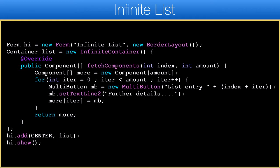In the real world we need lists to be more dynamic than that — we need to fetch data in batches. That's why we have the InfiniteContainer class, which allows us to fetch components as the user scrolls through the list. This is the same code from before but it creates list entries in batches instead of as a single block. The fetchComponents method is invoked with an index in the list and the amount of elements to return, then creates and returns those elements. This implicitly adds elements as we scroll and implements pull-to-refresh functionality.